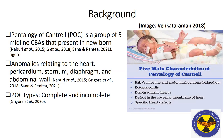Ectopia cordis is a situation where the heart is sited completely or partially outside the thoracic cavity. You also see another anomaly relating to the heart referred to as Tetralogy of Fallot. This presents four defects within itself, including a right ventricular outflow tract obstruction — narrowing or sometimes complete closure of the outflow tract from the right ventricle — resulting in reduced blood outflow.